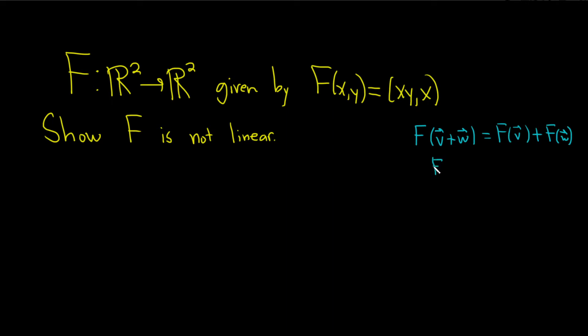And if you have F of a scalar times a vector v, that's equal to c times F of the vector. And this is true for all v, w, and for all scalar c. So this has to be true for all choices of vectors v and w and scalar c.